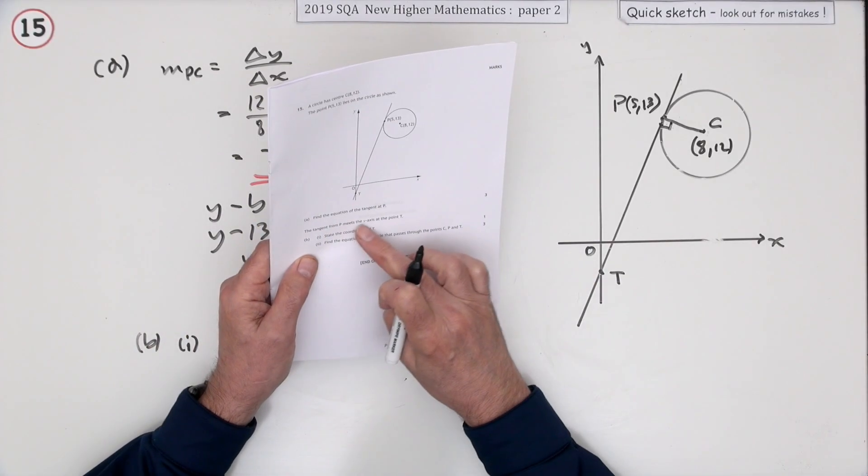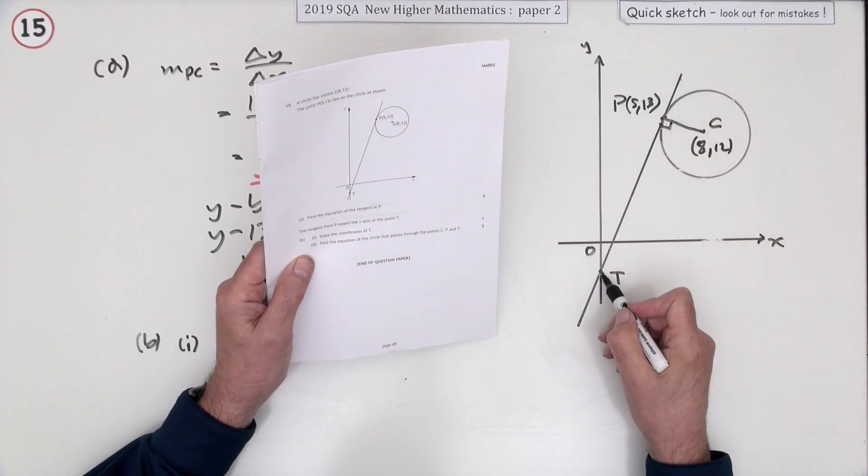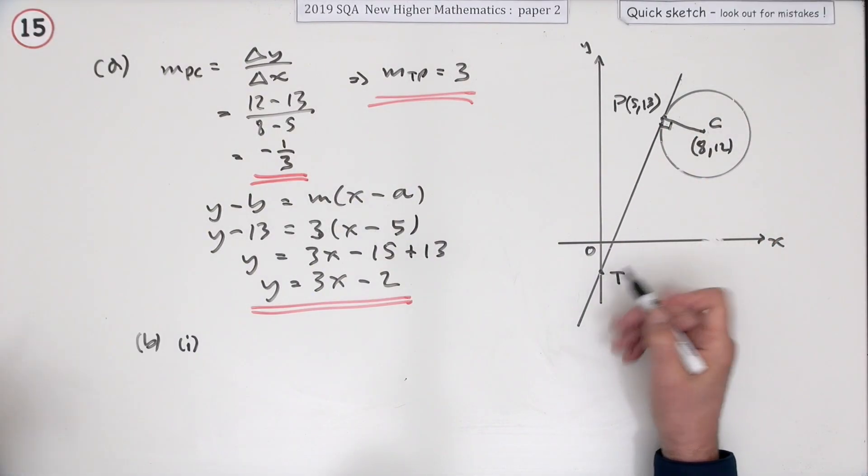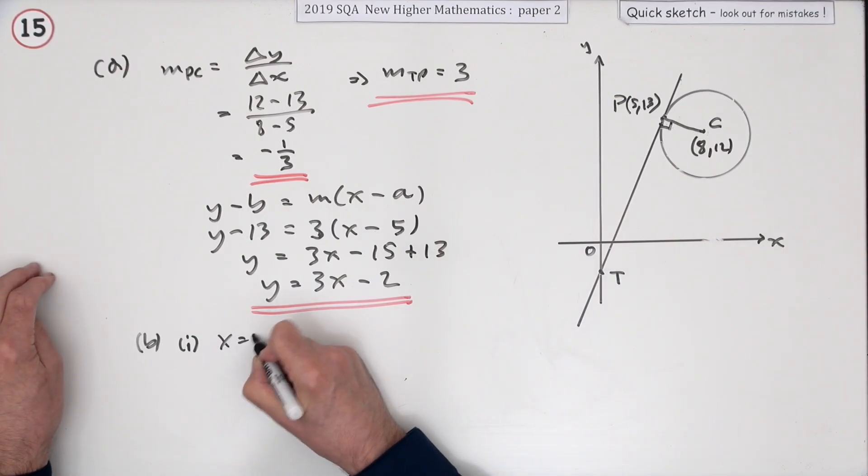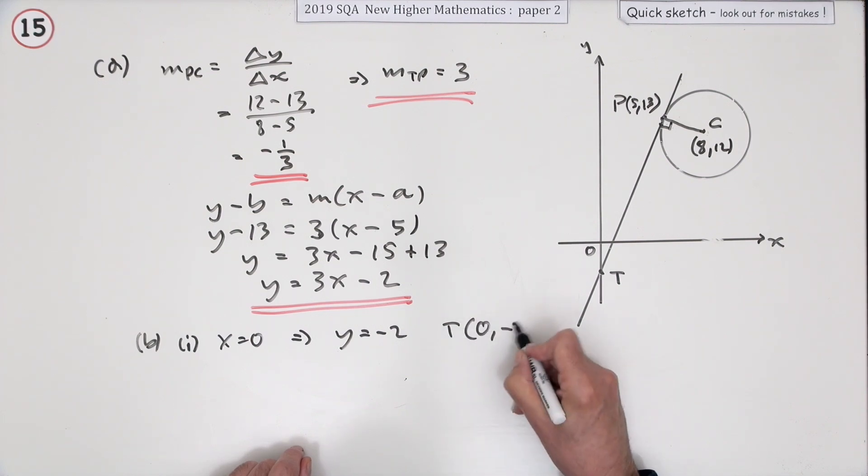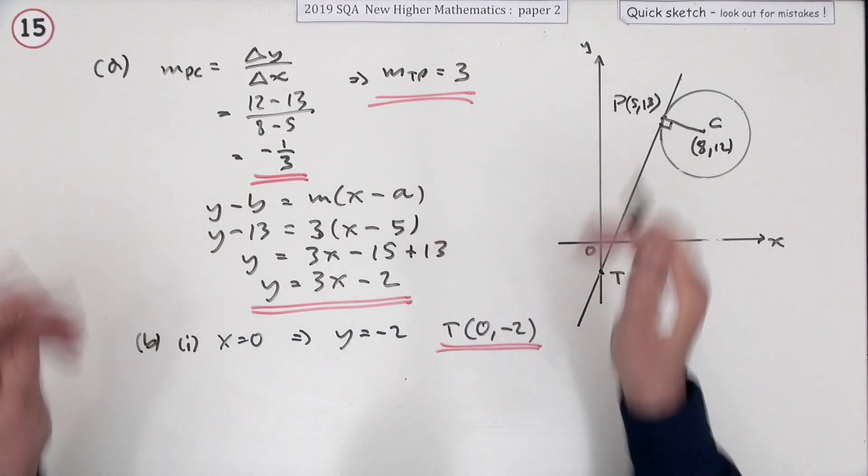And what does it say? The tangent from p carries on and cuts the y axis at t and just state the coordinates of t. Well that t, x equals 0. So that means y is negative 2, so t is the point 0, negative 2. This feels like the first question in the paper.